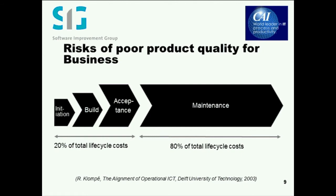If you look at the slide, you can see that the project is built up out of three different arrows, where build and acceptance actually includes testing — that's why build and acceptance are more or less equal. But maintenance is by far the largest aspect of your software project. What is interesting is that maintenance in general is not a line item in anyone's budget, but it is a very high cost and it's a risk driver.